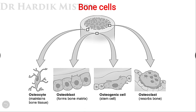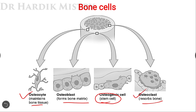When speaking about calcium metabolism, we must know about bone cells, the bone remodeling cycle, and the physiological aspects of bone. There are four types of bone cells. First, osteocytes — they maintain bone tissue. Second, osteoblasts — they form the bone matrix. Third, osteogenic cells — these are stem cells present in bones. Fourth, osteoclasts — these carry out bone resorption.